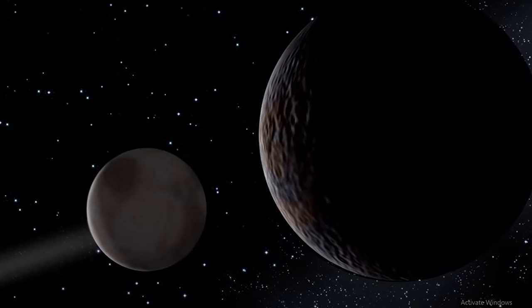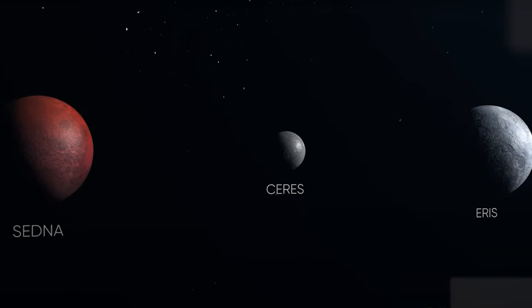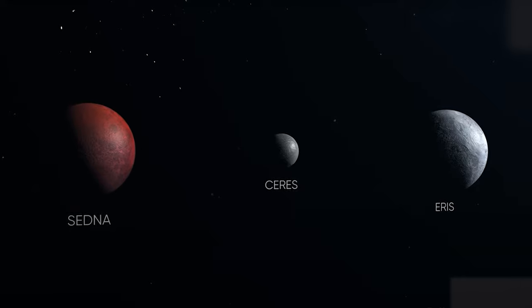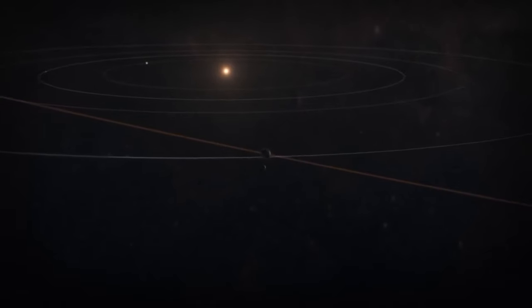This distinction positions Pluto closer in resemblance to smaller celestial bodies such as Eris, Ceres, or Sedna, a key factor that led to its classification as a dwarf planet in 2006.